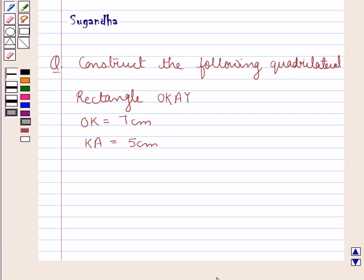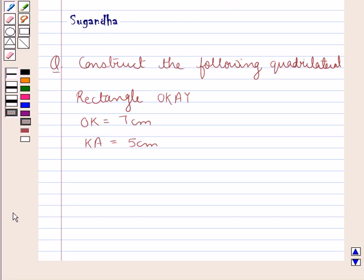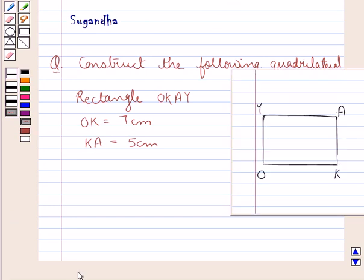Hello and welcome to the session. Today I'll help you with the following question: construct the quadrilateral rectangle OKAY, where OK is given to be 7 centimeters and KA is 5 centimeters. Before constructing the actual figure, let's first have a look at the rough sketch of the rectangle OKAY.